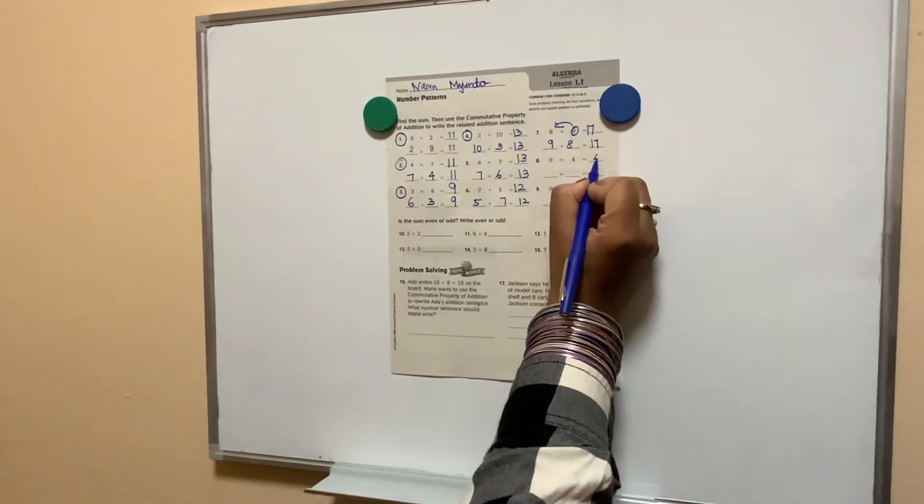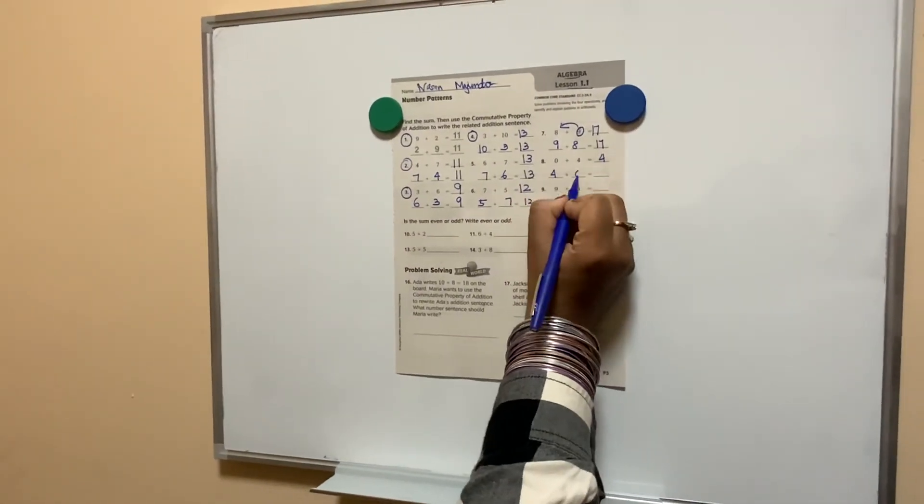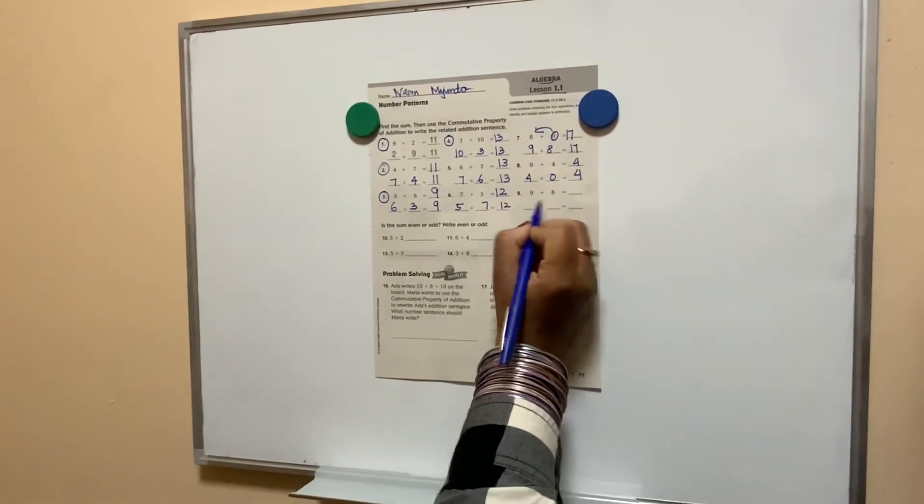0 plus 4 is? 4. 4 plus 0 is? 4. 9 plus 6 is?